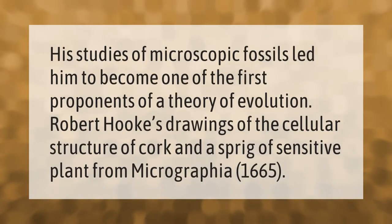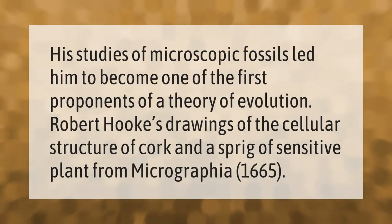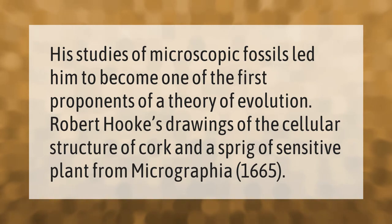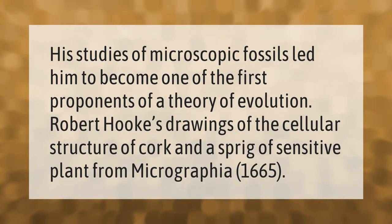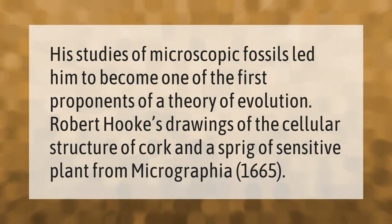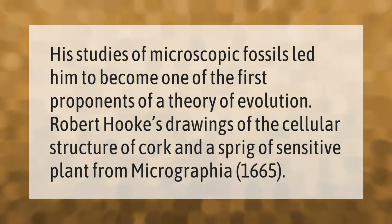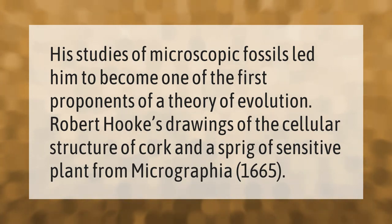His studies of microscopic fossils led him to become one of the first proponents of a theory of evolution. Robert Hooke's drawings of the cellular structure of cork and a sprig of sensitive plant from Micrographia, 1665, are notable examples.